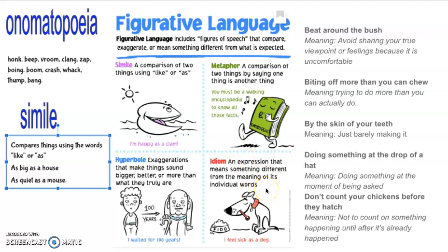An idiom is an expression that means something different from the meaning of its individual words. Here are some examples. The first one: 'beat around the bush.' We're not beating around any bush, but what that means is you don't really come right to the point. You kind of go around what you're trying to explain without really saying what you're supposed to say. You know, when you get in trouble and your mom says 'why did you do that?' you might beat around the bush and not really get to the point. You're beating around the bush.